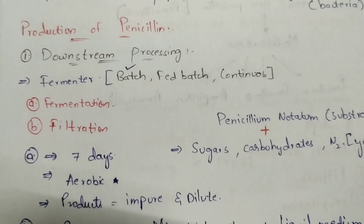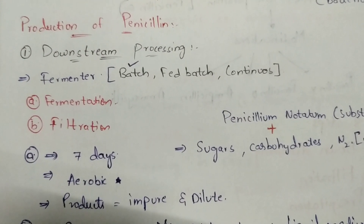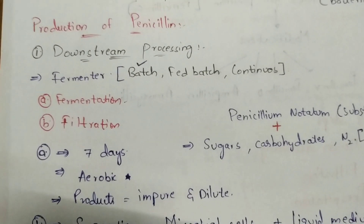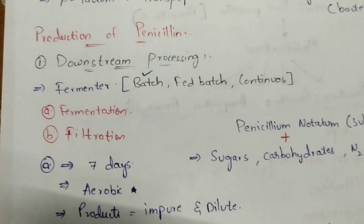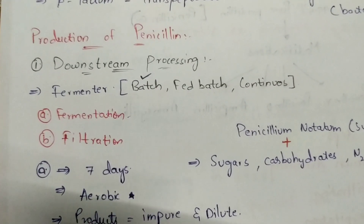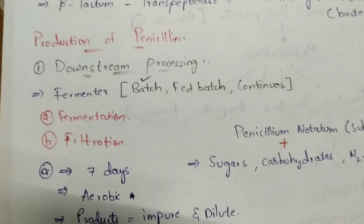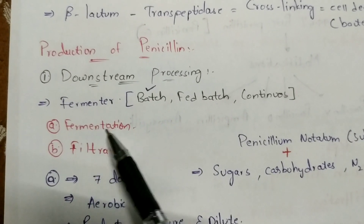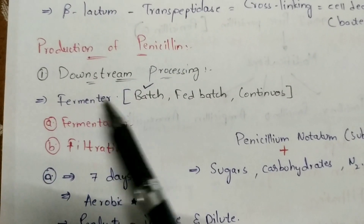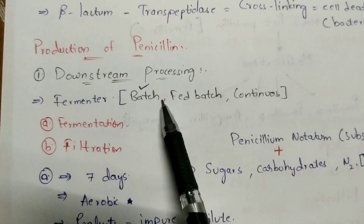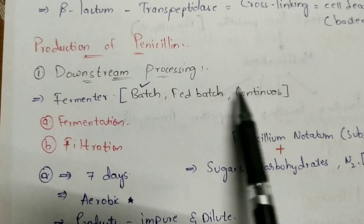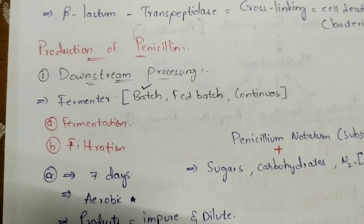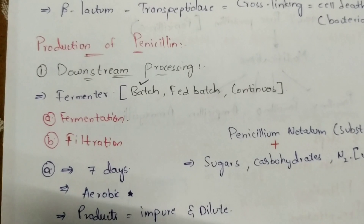The production of penicillin takes place by downstream processing. In downstream processing, the fermentation process takes place, for which a fermenter is used. Fermenters are of various types: batch fermenter, fed-batch fermenter, and continuous fermenter. For the production of penicillin, a batch fermenter is used. In World War 2, a fed-batch fermenter was used because it is used in large-scale industries to produce large amounts.